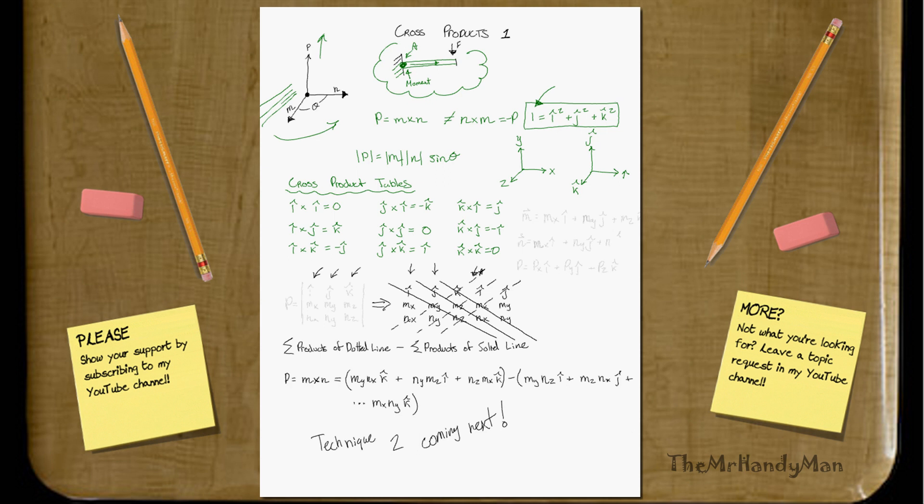Your m vector is going to equal whatever your x component is of m, i hat, plus your m y component with j hat, plus m z with k hat. This is just a way for us to split up the components in a legible fashion. n x i hat plus n y j hat plus n z k hat. And then let's finish it off with p: p x i hat plus p y j hat plus p z k hat.